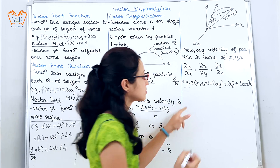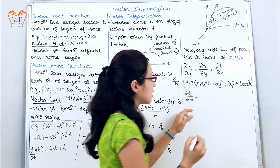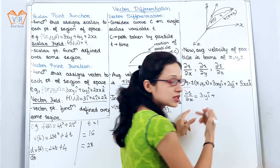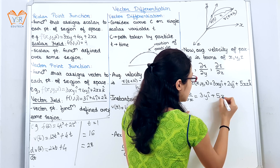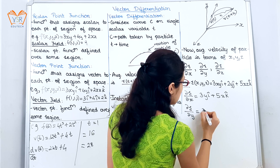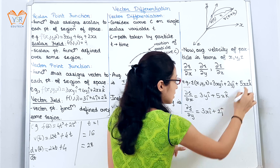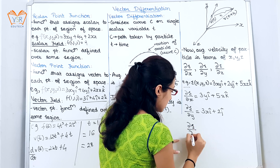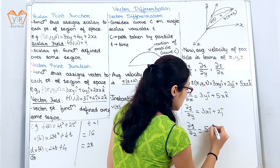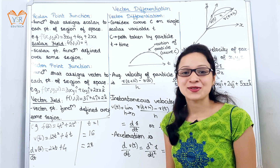We will consider one example. With respect to x, we get 3y î + 0 + 5z k̂. With respect to y, we get 3x î + 2ĵ, and the last term is 0. With respect to z, the first two terms are 0 and the last gives 5x k̂. So this is all about vector differentiation. Hope you have understood the concept. Thank you.